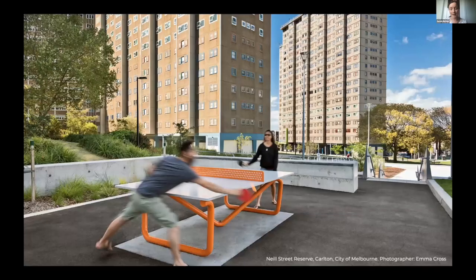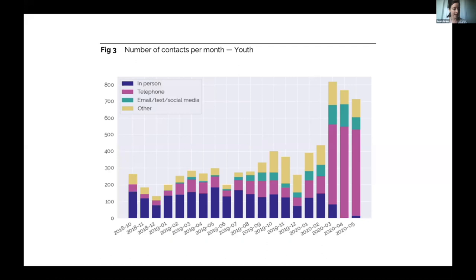The other end of the coin is that once you understand community need and design your programs and services, you want to understand what impact you're having. Crunching data can really help there. I've got an example from a project we did with Task Force Community Services here in Melbourne, who provide alcohol and other drugs counseling to vulnerable people in Southeast Melbourne. We helped them crunch some of their data — some of which they'd never really looked into before.